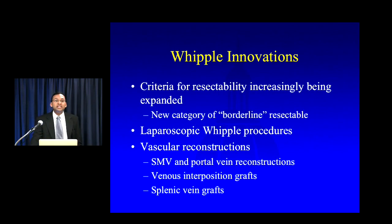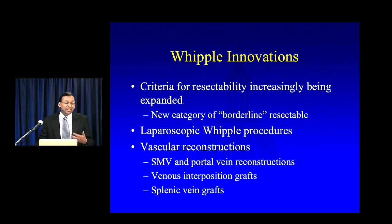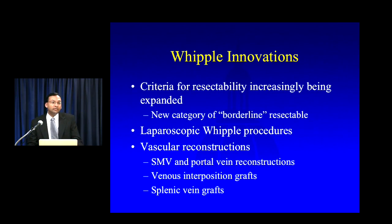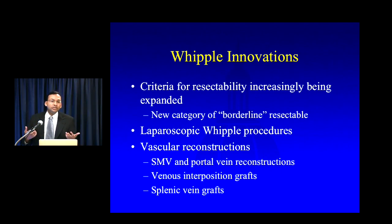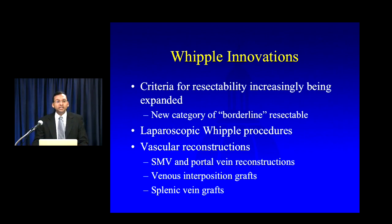It is worth noting that the criteria for utilizing the Whipple procedure has dramatically expanded over the last decade. In the old days, if you had pancreatic cancer and wanted a resection, you essentially had to have no metastatic disease and no significant vascular involvement. But as we've developed this new category of borderline resectable pancreatic cancers, we've found that even patients with relatively significant vascular involvement by tumor are still potentially surgical candidates, resulting in a dramatic increase in Whipple procedure volume at Hopkins.